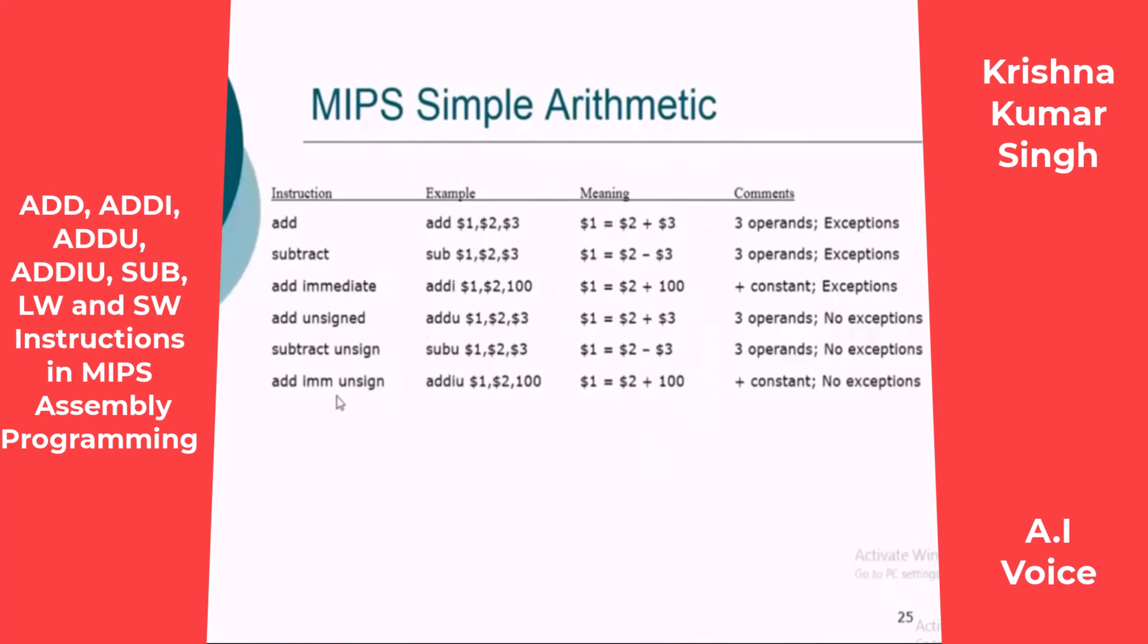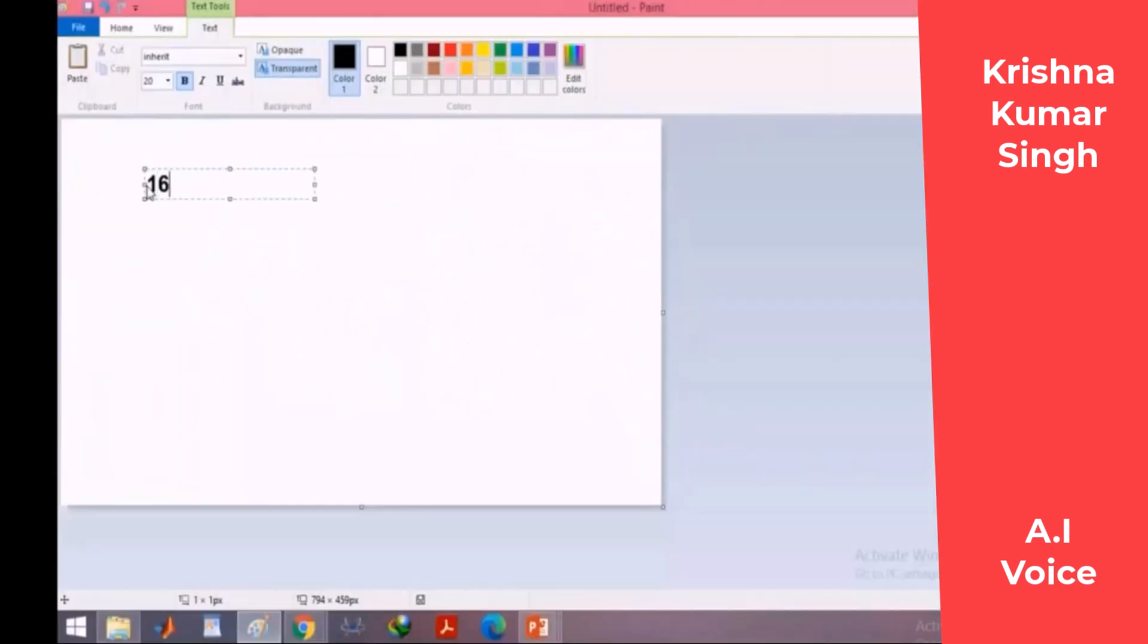Minus 1 is 65,535. So an unsigned 16-bit number will be between 0 to 65,535, which is 2 power 16 minus 1.